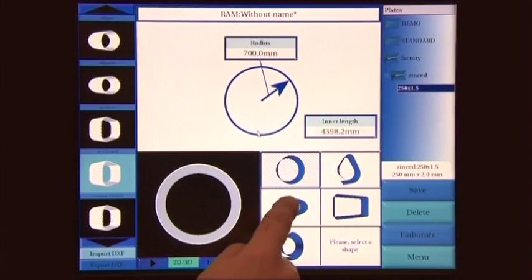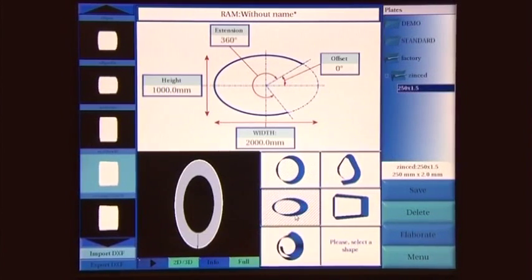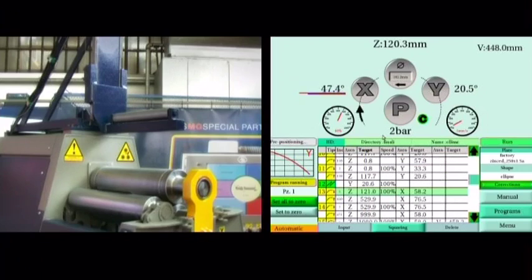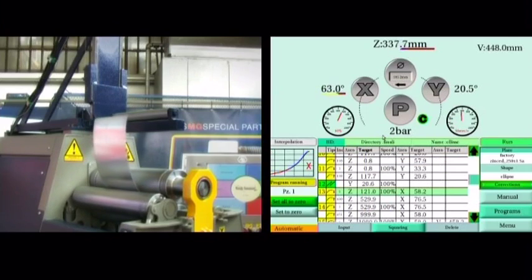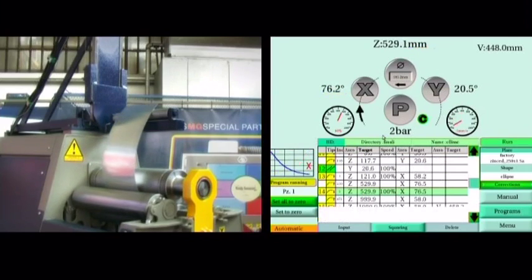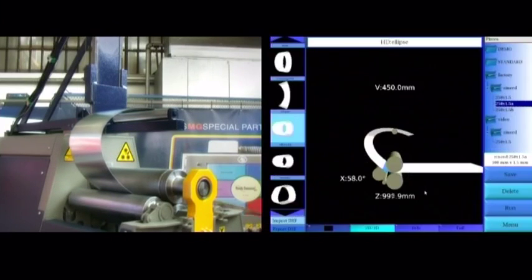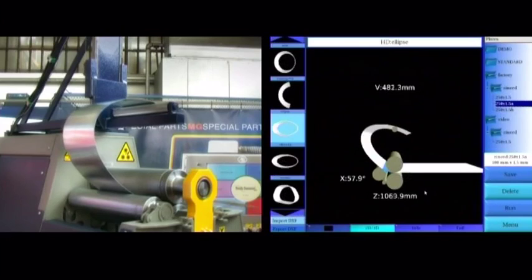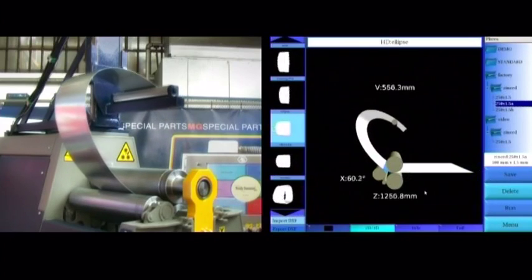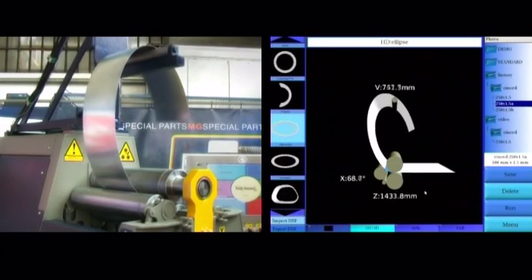Let's close our demo showing the bending of an elliptical shape. The program has been generated following the same steps adopted for the rectangular tank. Obviously, if we use the same plate it's not necessary to repeat any test on it, but it's enough to select the previously saved plate and launch the elaboration with a new shape data.